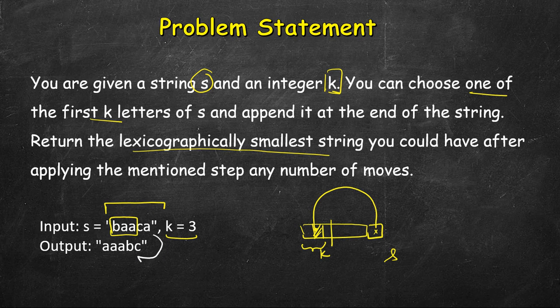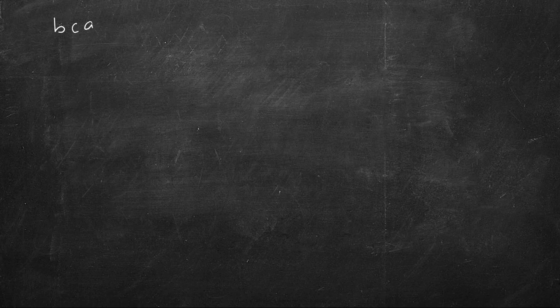For the example 'baaca' with k=3, the best (smallest) string we can get is 'aabc' — essentially all letters sorted. But can we always sort the string? Let's explore. If k=1, that is the smallest possible value of k.